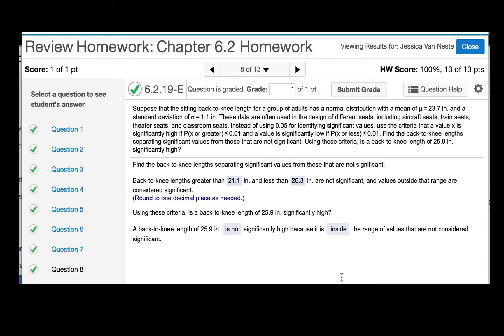These data are often used in the design of different seats, including aircraft seats, train seats, theater seats, and classroom seats. Instead of using 0.05 for identifying significant values, use the criteria that a value x is significantly high if the probability of x or greater is less than or equal to 0.01, and a value is significantly low if the probability of x or less is less than or equal to 0.01.